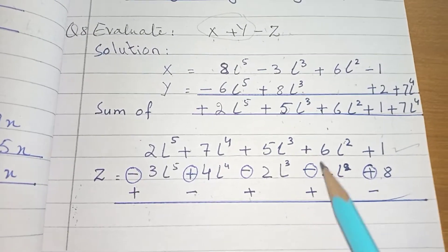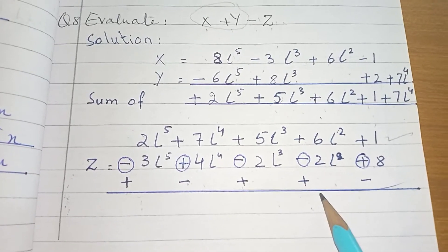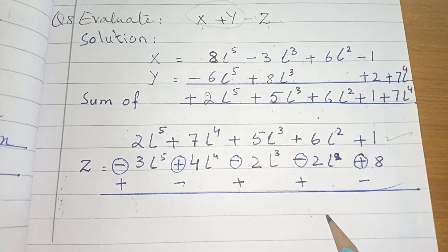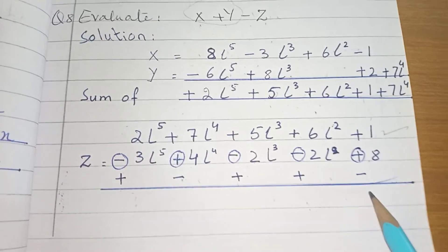Plus plus plus plus, plus plus plus. 5 plus 2 is equal to 7, 7L power 3. Plus plus plus, 6 plus 2 is equal to 8L power 2 square. Then plus minus, minus. 8 minus 1, 7 is left.